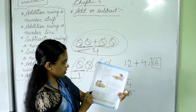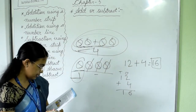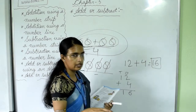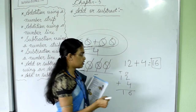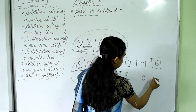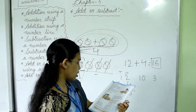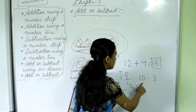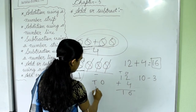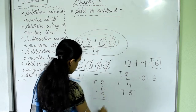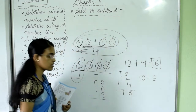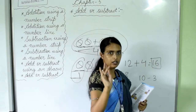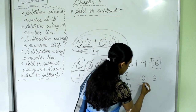Next question: there are 10 books on the table and 3 books were taken away — taken away means subtraction. So 10 minus 3. The answer is 7. So 10 minus 3 equals 7.